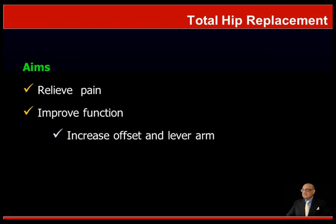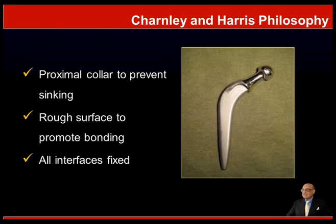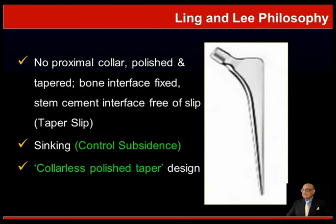Moving on to total hip replacement and biomechanics, the aim of total hip replacement is to relieve pain and improve function, by increasing the offset and the lever arm. Charnley and Bill Harris's philosophy used a prosthesis with a proximal collar to prevent sinking, a rough surface to promote bonding, and all interfaces—both acetabular and femoral components—were fixed with cement. The Ling and Lee philosophy used no proximal collar; the implants were polished and tapered, the bone-cement interface was fixed, and the stem-cement interface was free to slip inside the cement mantle—a tapered slip—allowing for controlled subsidence, a collarless polished taper design.